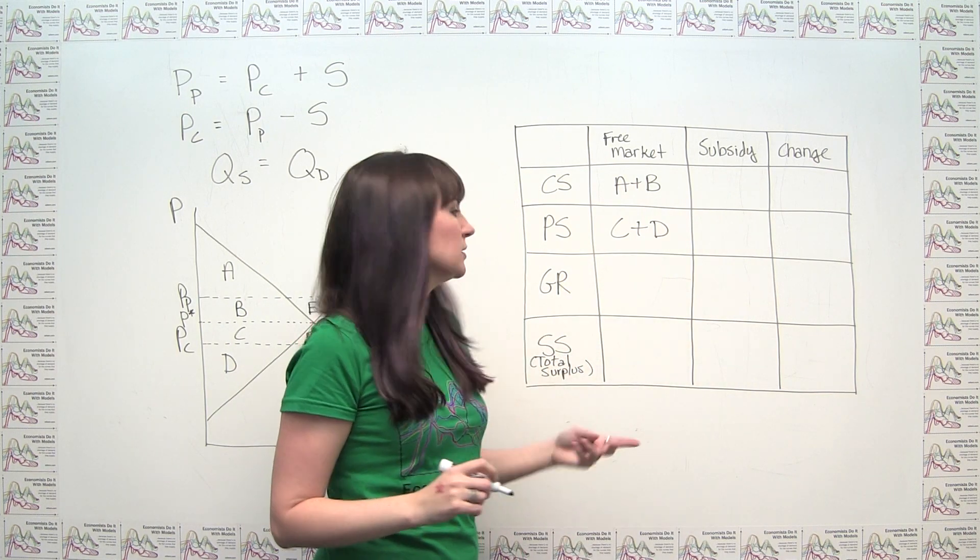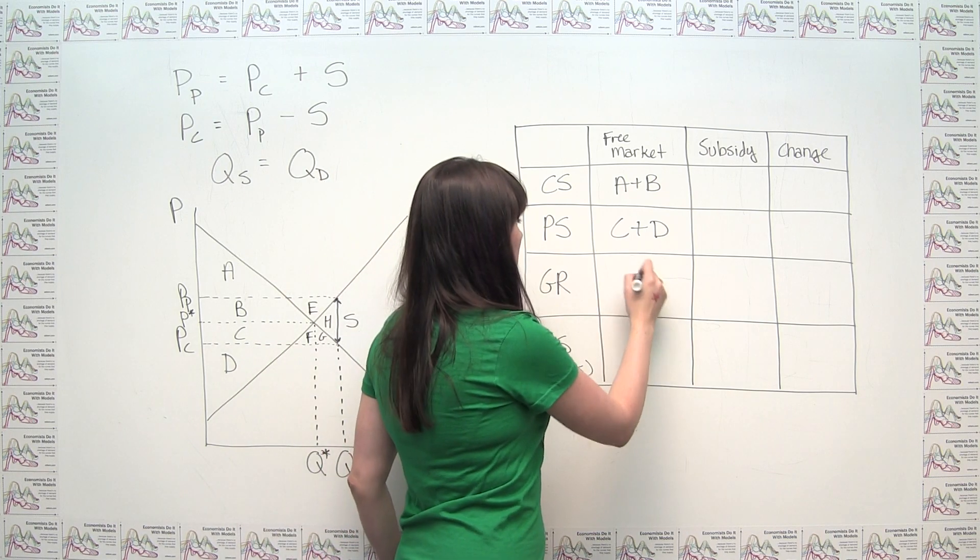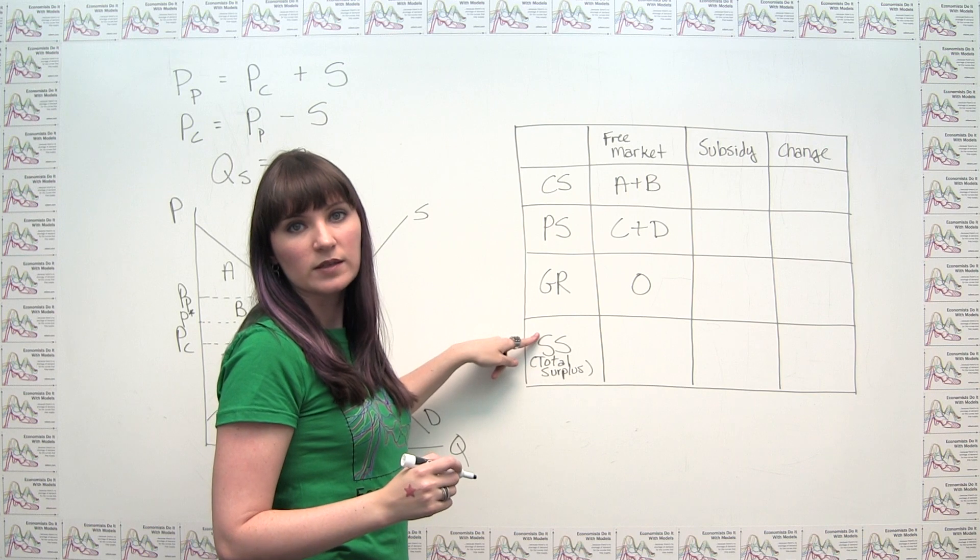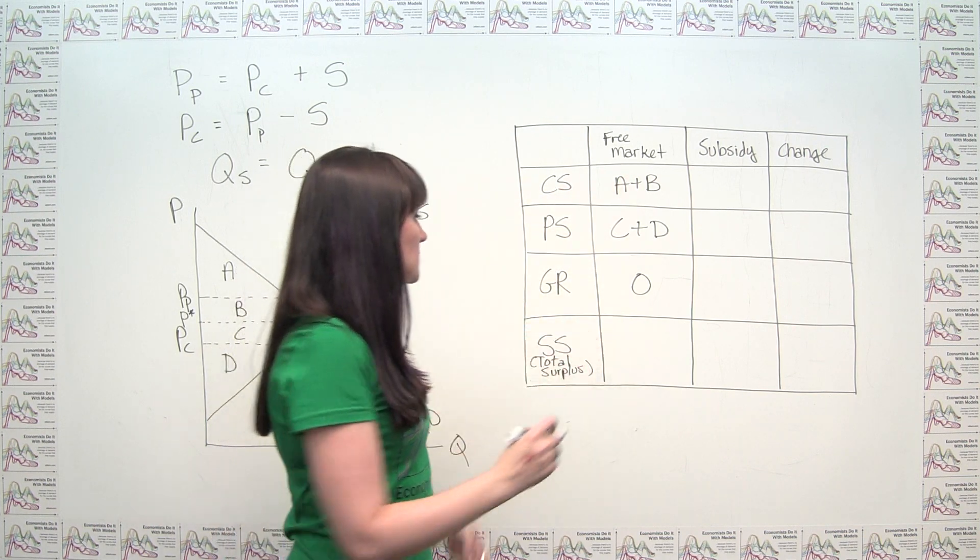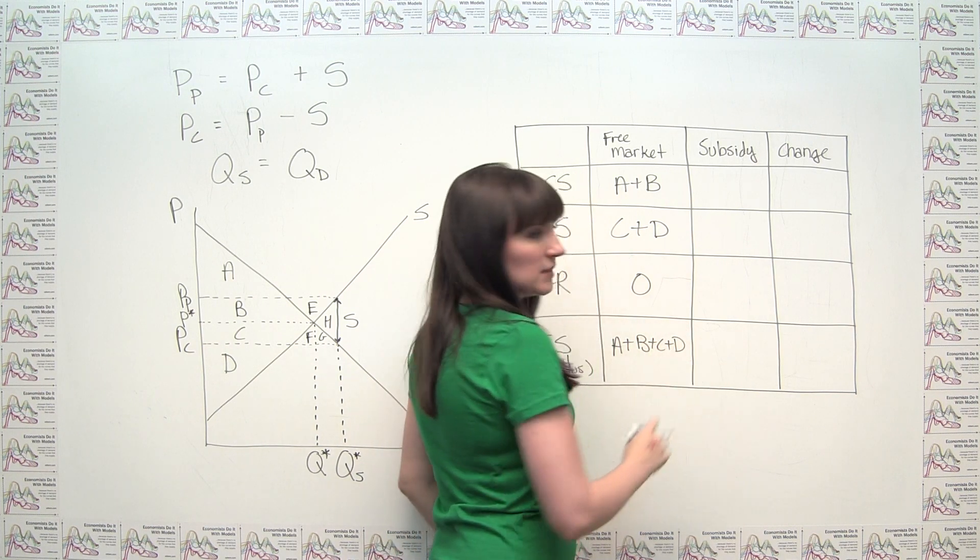By definition, in a free market, government revenue is zero because there's no government involvement. And total surplus, or social surplus, depending on what notation your textbook uses, is just going to be the sum of all these things, or A plus B plus C plus D.